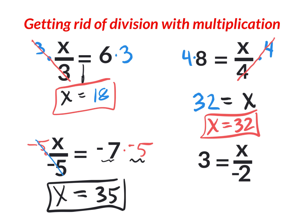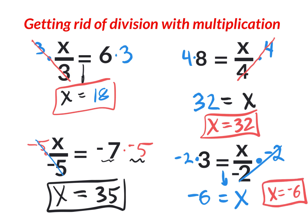The last division question: a number divided by negative two equals three. It's better to show your work. To get rid of division by negative two, do the opposite — multiply by negative two — that same exact value. What you do to one side you do to the other: multiply by negative two. The answer is negative six. X equals negative six.